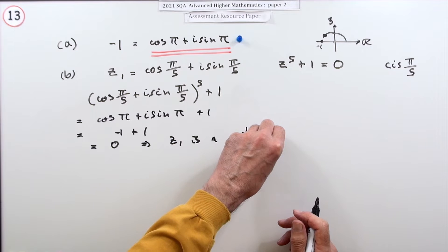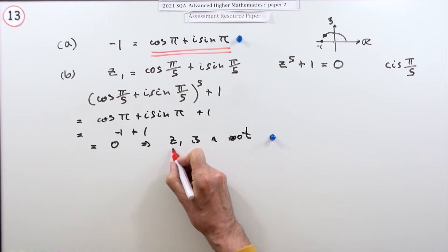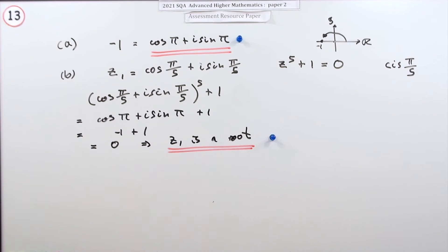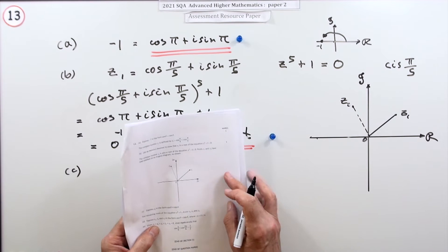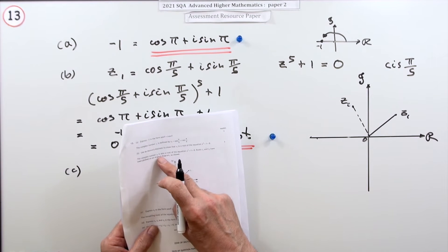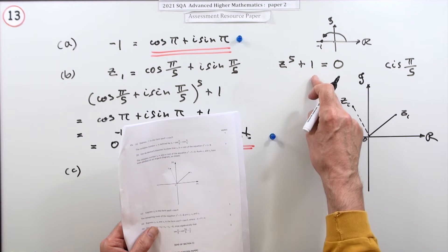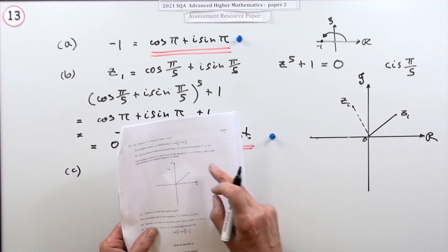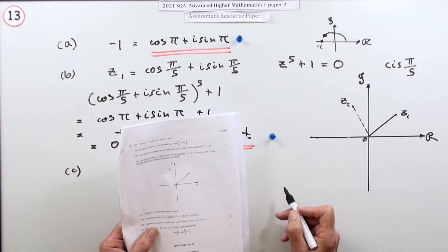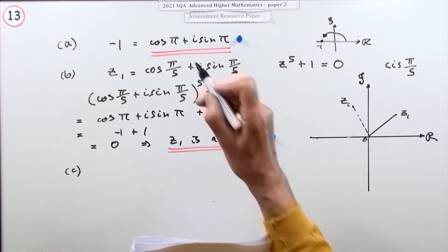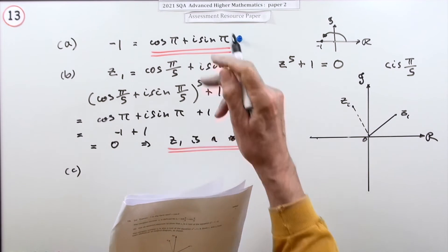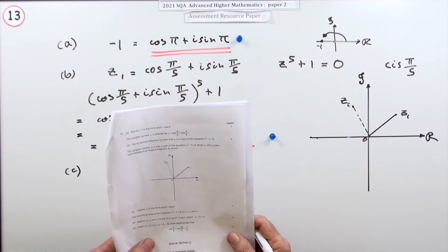There's only one mark for all that working. Now part c: the complex number z2 is also a root of the same equation. z1 and z2 have been plotted on this Argand diagram. Express z2 in polar form — cos θ + i sin θ — for one mark.